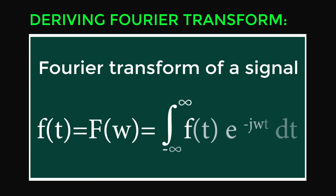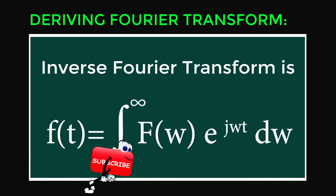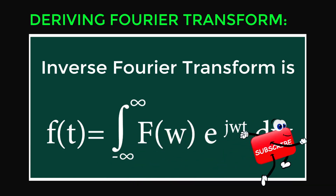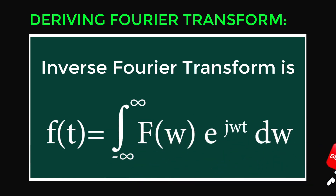Fourier transform of a signal f(t): F(ω) = ∫ (-∞ to ∞) of f(t) · exp(-j·ω·t) dt. Inverse Fourier transform: f(t) = ∫ (-∞ to ∞) of F(ω) · exp(j·ω·t) dω.